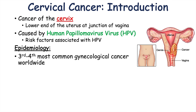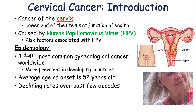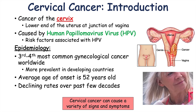Cervical cancer is a very common type of cancer — it's the third to fourth most common gynecological cancer worldwide, and it is more prevalent in developing countries. The average age of onset is 52 years old, and there have been declining rates over the past few decades due to increased screening programs with pap smears. The focus of this lesson is the signs and symptoms, which we'll cover in the upcoming slides.